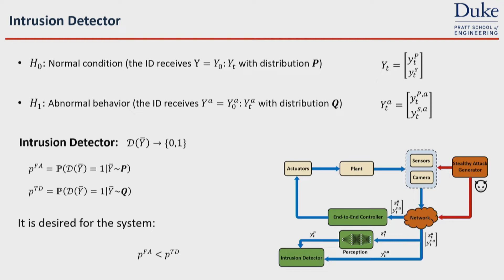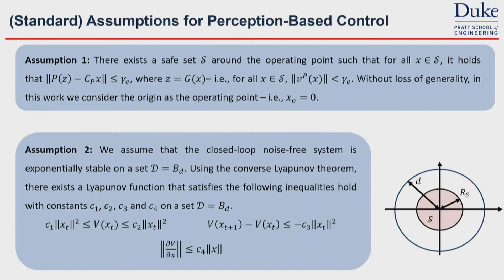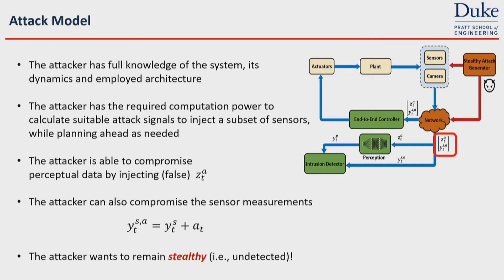For the intrusion detector, we assume it receives a sequence of measurements consisting of the perception module output and sensor measurements, and it solves a binary hypothesis testing problem at each time step. It is desired for the system to have probability of true detection be greater than probability of false alarm in order to detect the attack. Throughout the paper we make two assumptions: there exists a safe set around the operating point and the perception module's error is bounded, and also the closed-loop control system when noise is turned off is exponentially stable. To model the attack, we assume the attacker has full knowledge about the system's dynamics and architecture and has enough computation power to calculate a suitable attack vector ahead of time.